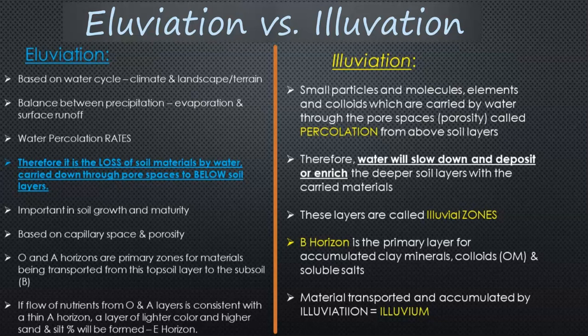You're also going to have organic matter and colloids — small particles of humus that are the resistant form of decomposing material — carried in the water as well. When the water takes all these materials from a certain layer, say the O and A layer at the surface — the topsoil, the surface horizon, the litter — that process is called eluviation, which is Latin for 'washed out.'